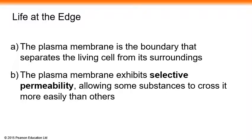The plasma membrane surrounds the cell, so that's the boundary for the cell. The plasma membrane is the boundary that separates the living cell inside from its surroundings outside. The plasma membrane exhibits selective permeability, allowing some substances to cross it more easily than others. That's why it's called a selectively permeable membrane.